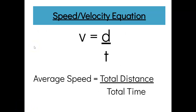This is just a reminder of our speed and velocity equations. V is equal to D over T. And if we're asking for an average speed or an average velocity, it's just going to be the total distance over the total time. So if a problem is asking you for average speed or velocity, it's total distance over total time.